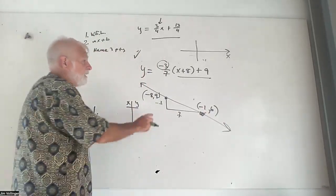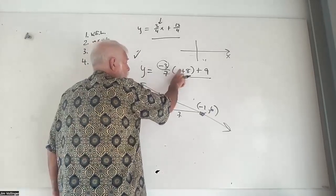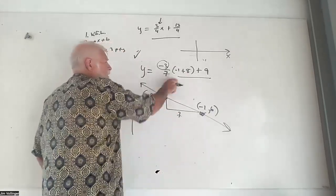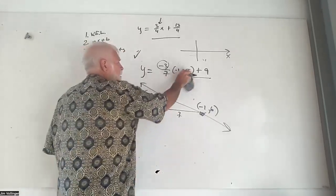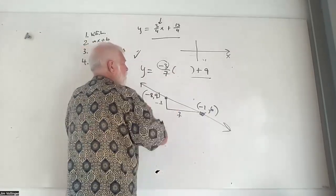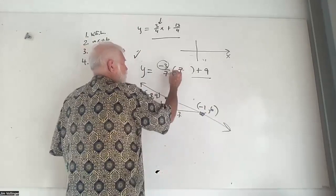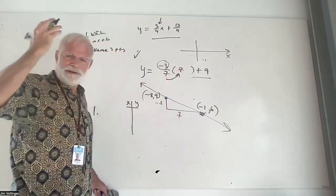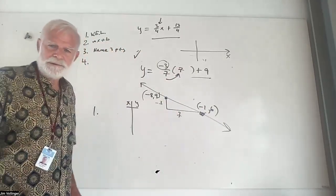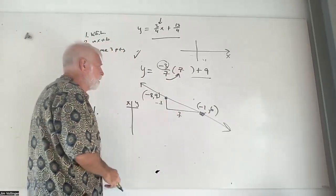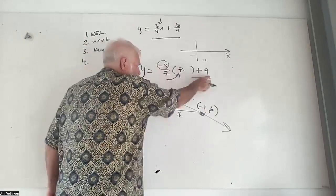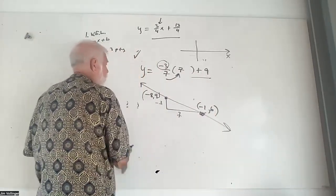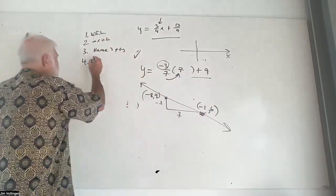It doesn't hurt to see it work. What's minus one plus eight? Seven — seven goes into seven. Minus three plus nine is six. Sketching.